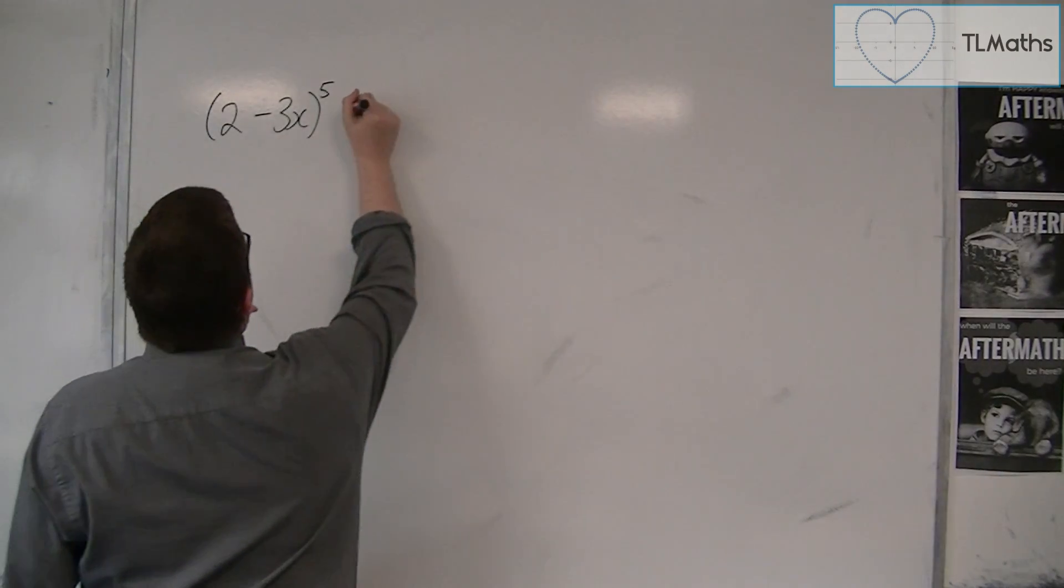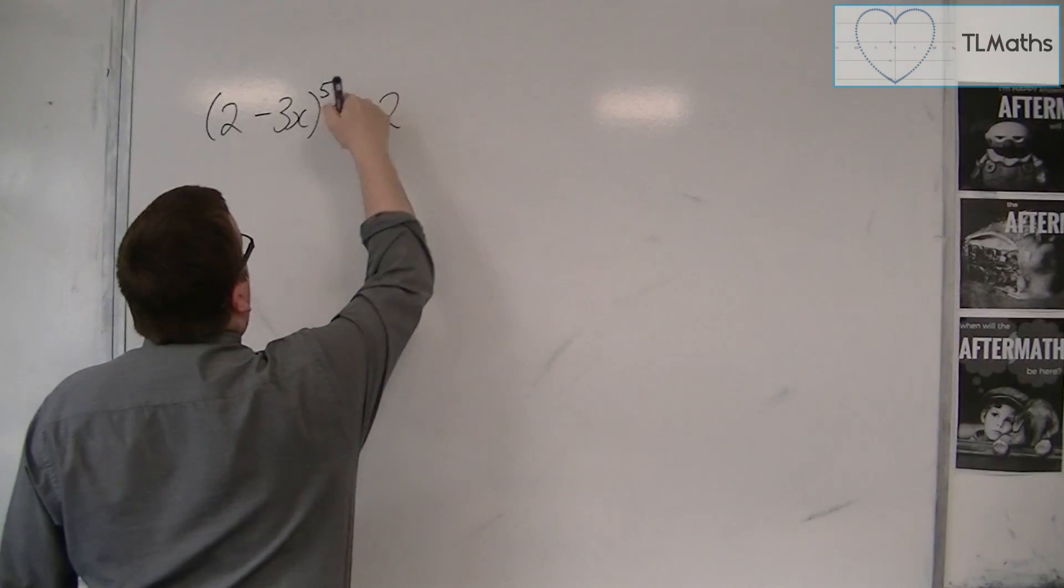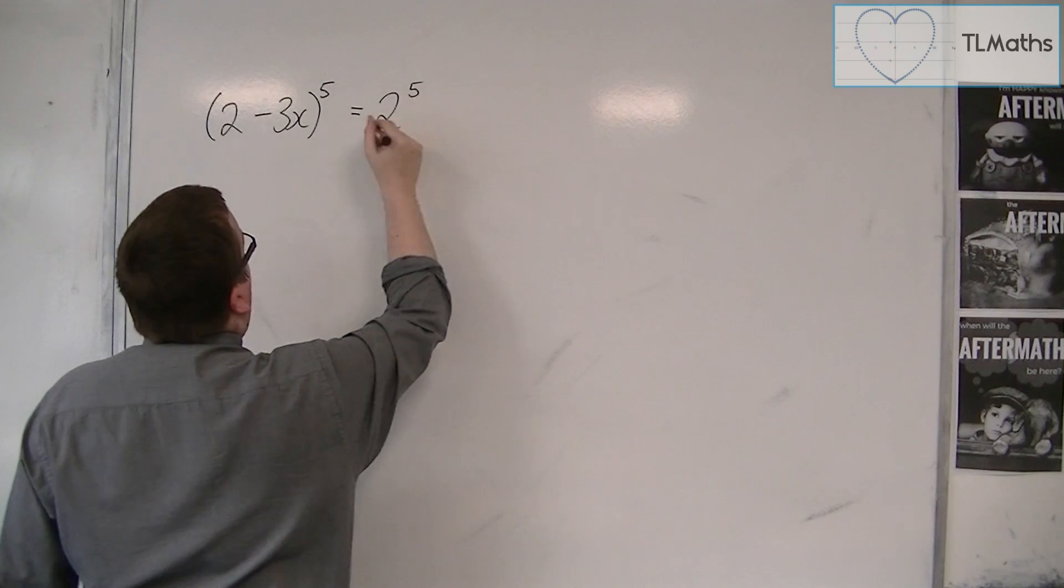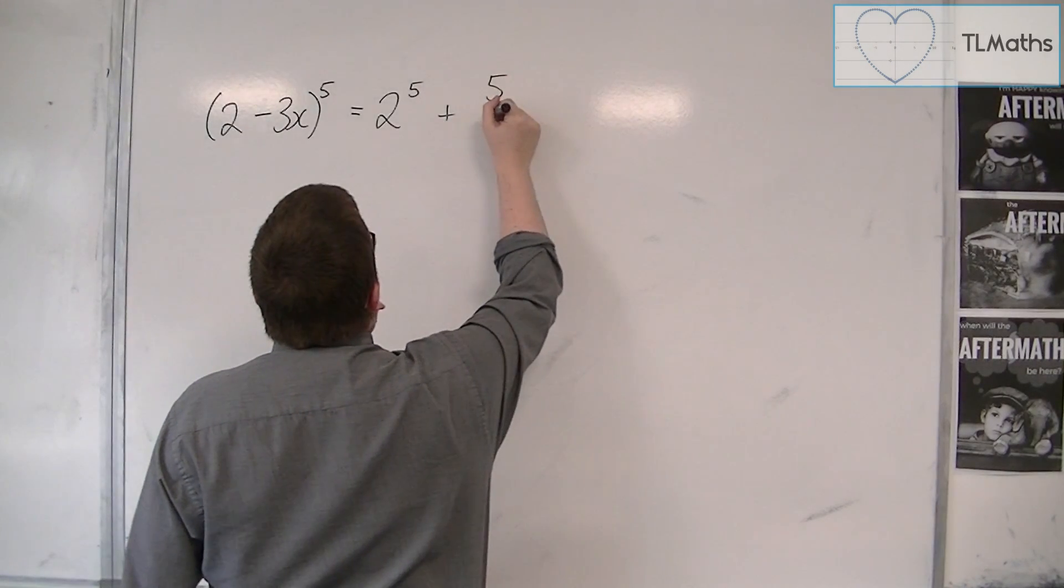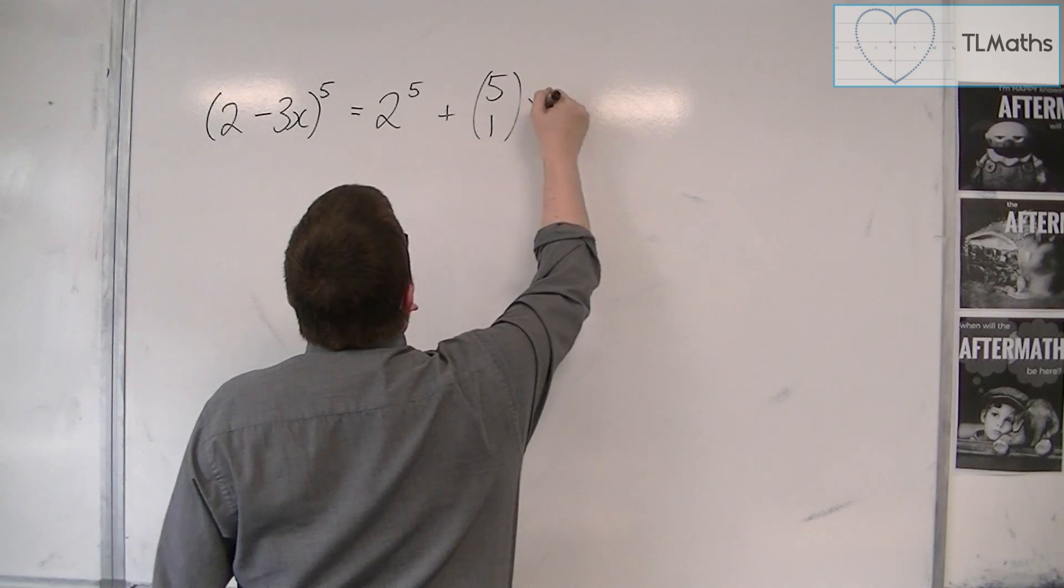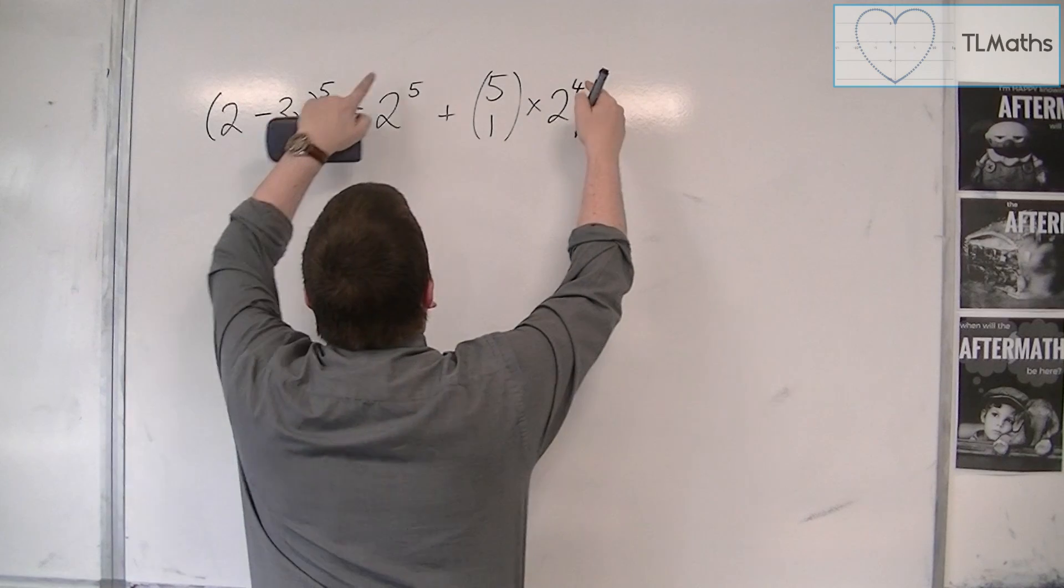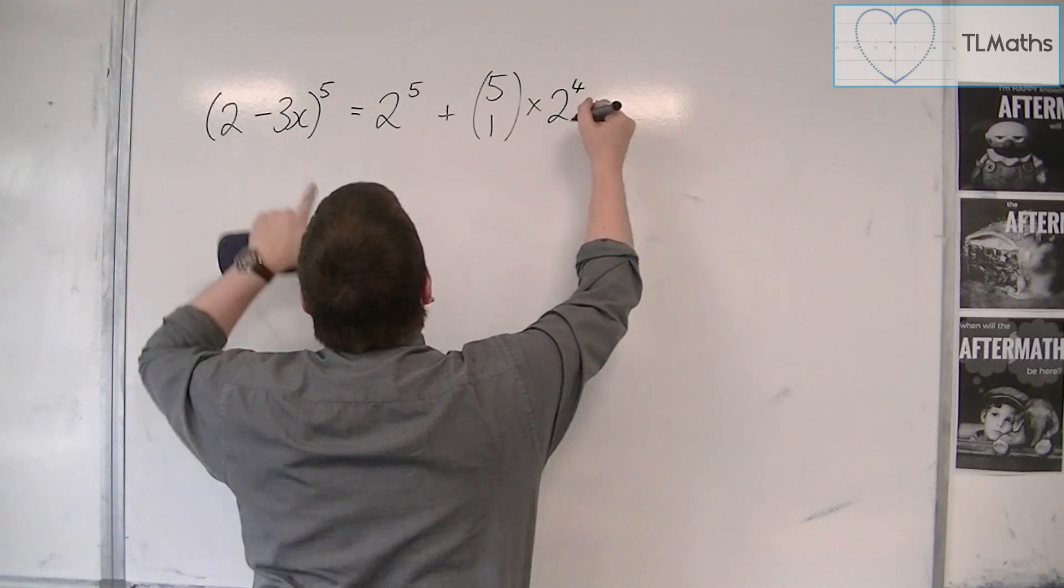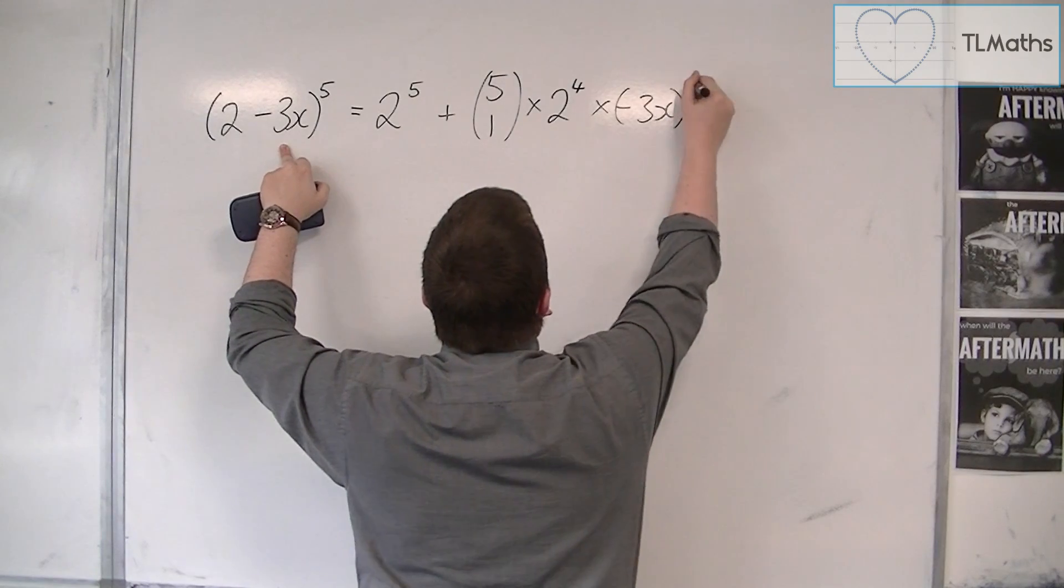Then this is equal to this number, the 2, to the power of 5, plus 5 choose 1 times 2, so this number to the power of 4, so it reduces in power, times by the minus 3x to the power of 1.